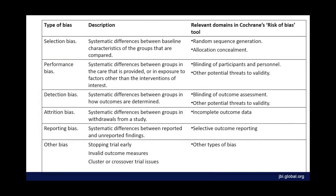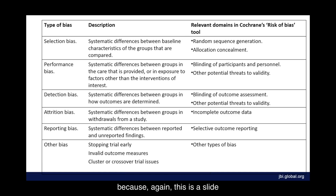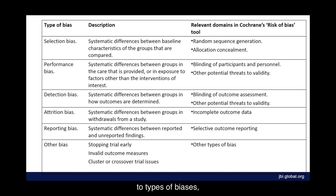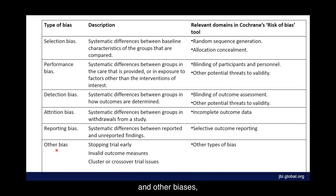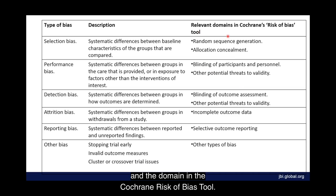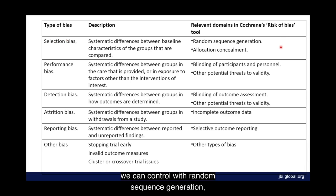These are the main types of biases you will have been exposed to before from our teaching material: selection bias, performance bias, detection bias, attrition bias, reporting bias, and other biases — with descriptions of each and how we can control for them. These have been aligned with the domain in the Cochrane Risk of Bias tool. For example, selection bias can be controlled with random sequence generation.